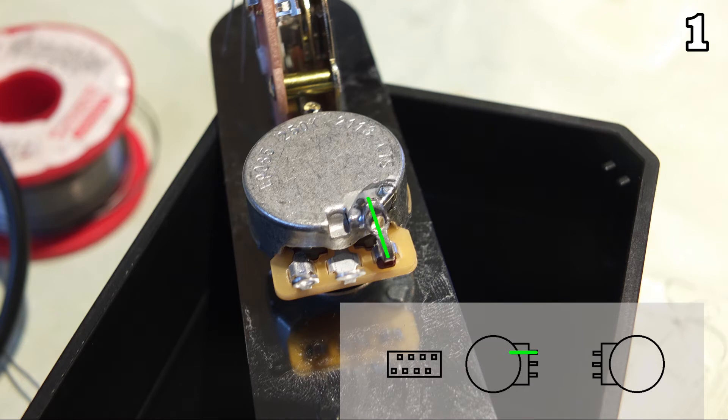First let me please explain how to read these pictures. What we see here is step number one, which I've marked in the top right corner. On the bottom right are always the schematics. Each color represents one connection or component that needs to be soldered in this step.